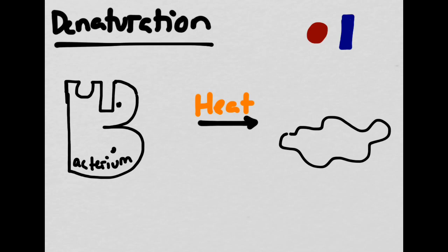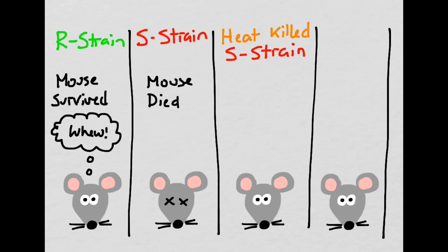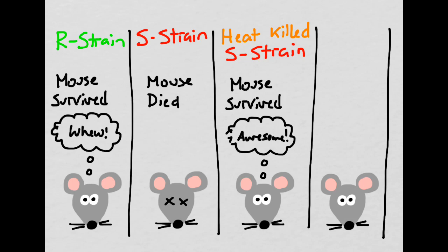Griffith exposed his bacteria to the heat source. When exposed to the heat, the bacterium changed their shape. Of course, he wasn't able to see the bacteria change its shape, but he was able to conclude that this is what had happened. When he took the heat-killed S-strain, which used to be deadly, and injected it into a mouse, amazingly enough, the mouse survived. Heating the S-strain bacteria had caused them to become denatured, so they no longer were deadly.